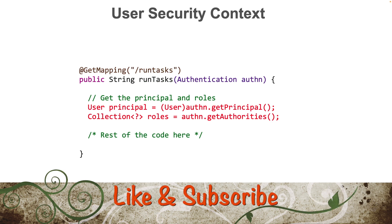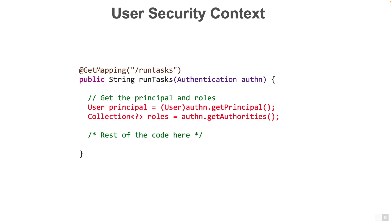Now that we have seen how @Async works, let's see what a user security context is. If we assume that our code is secure, then any running code in our application would be associated with a user who has certain privileges. In application servers, code always runs on a dedicated thread for a user request, which means it's common to associate security information to this dedicated thread. This user information is called the security context of that thread, essentially saying that this thread is running as a particular user with certain privileges.